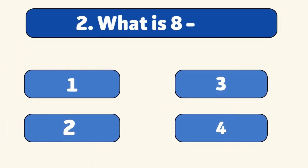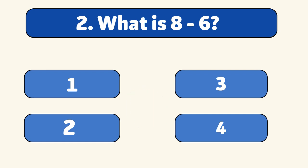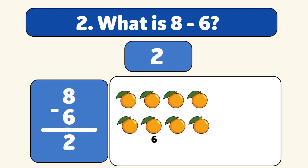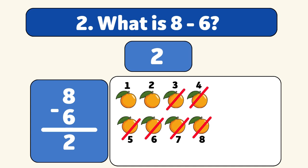What is eight minus six? The answer is two. We start with eight oranges and take away six. Let's count. One, two, three, four, five, six. You're doing amazing.